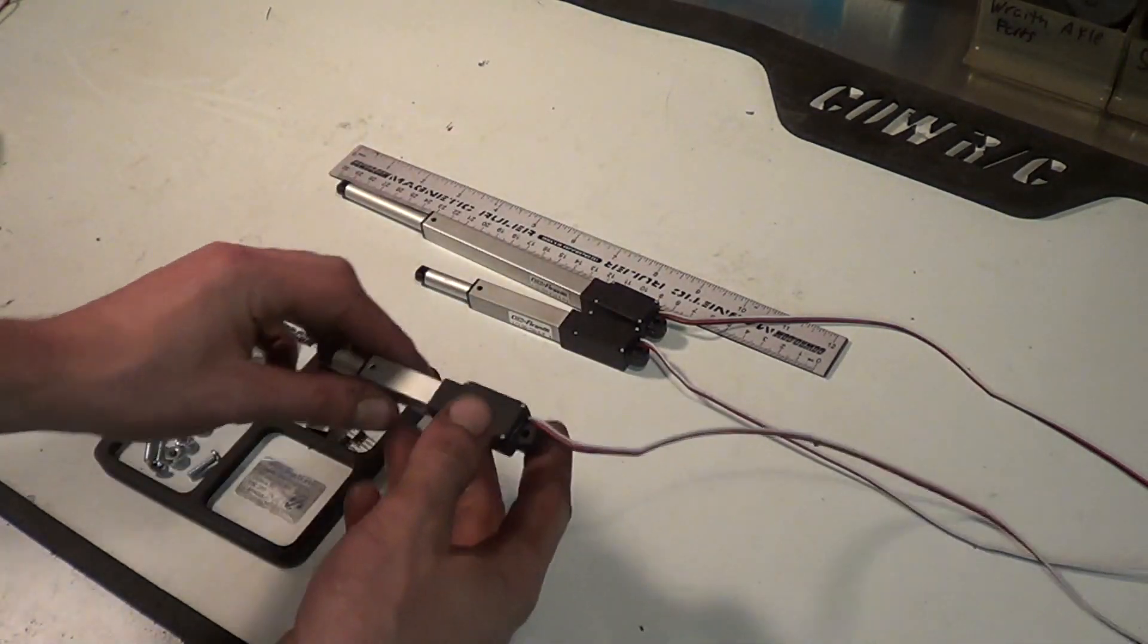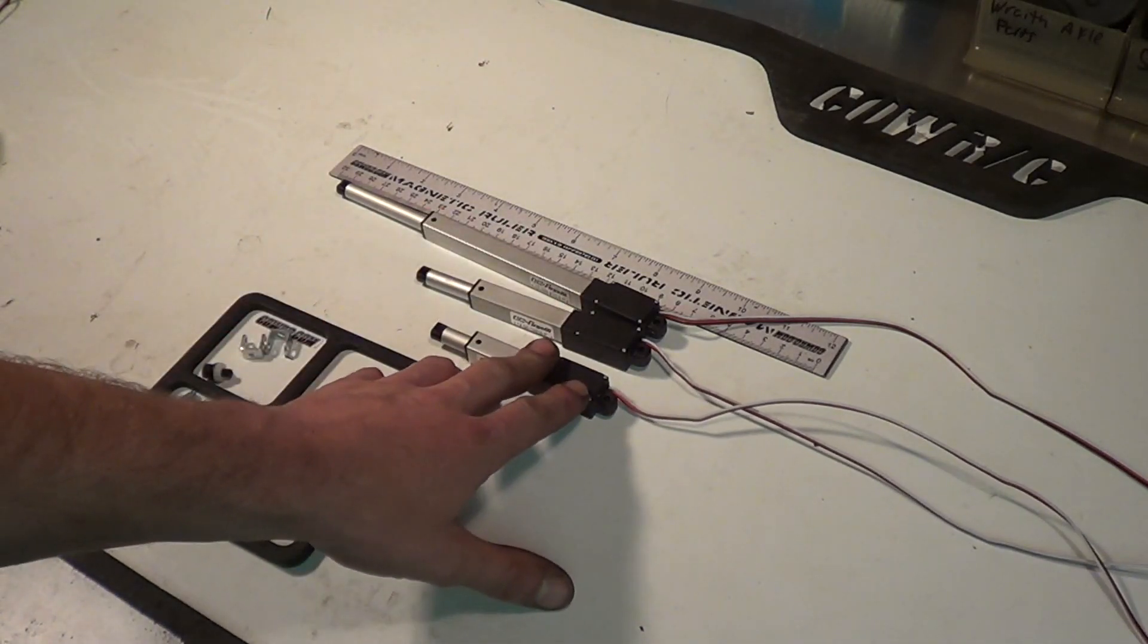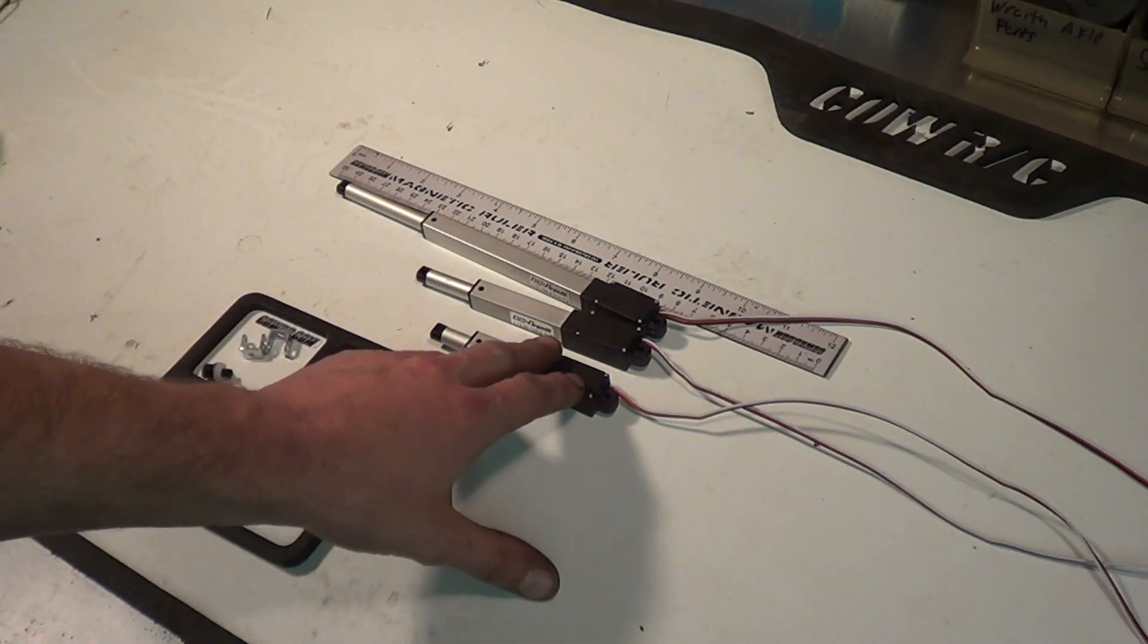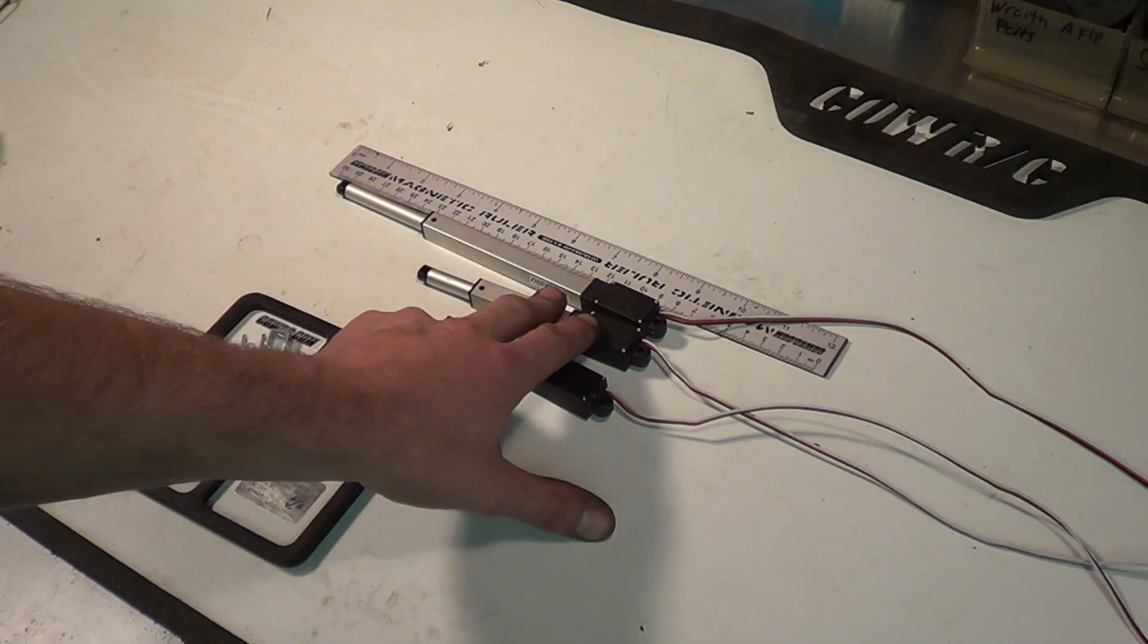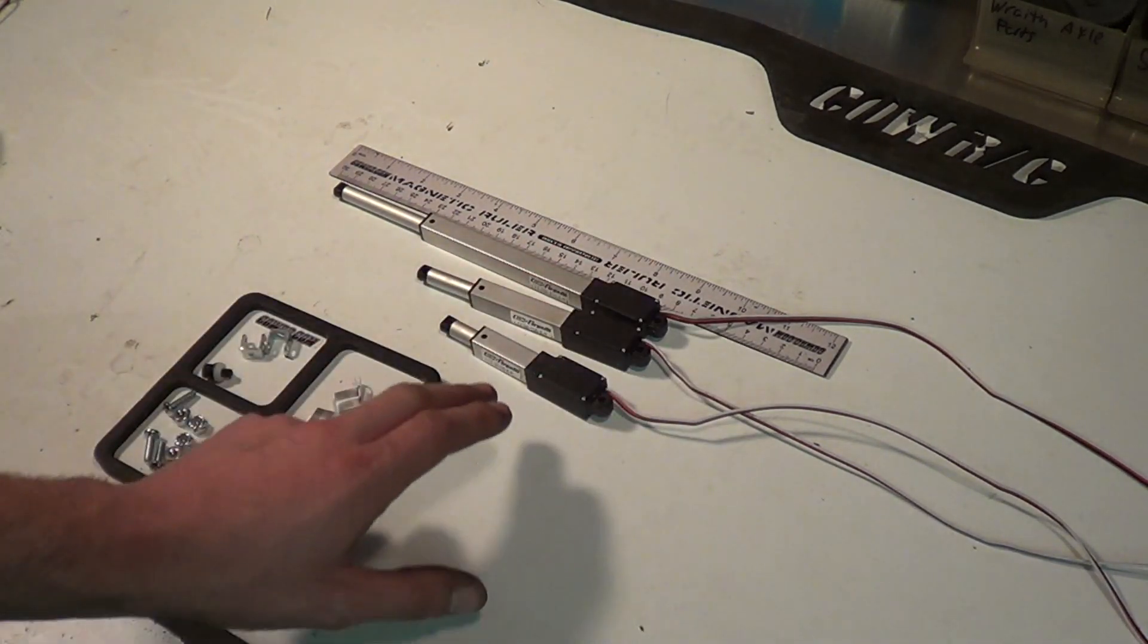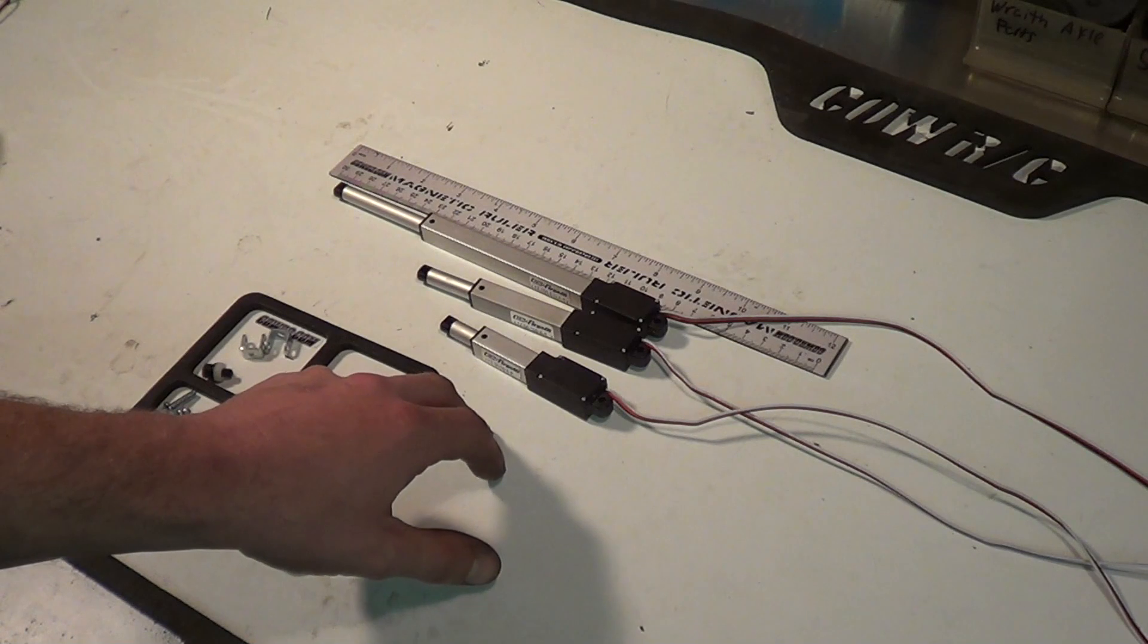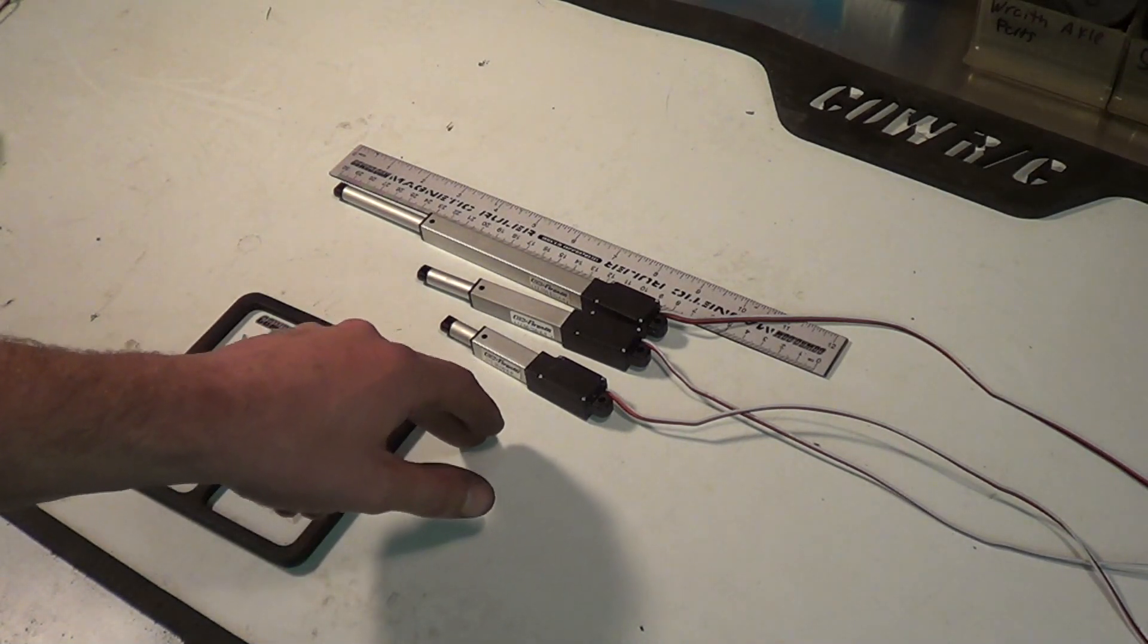They come in three different sizes and three different gear ratios. This one has 30mm of travel, this one has 50mm of travel, and this one has 100mm of travel. You can get them in a 50 to 1 gear ratio, a 100 to 1 gear ratio, or a 210 to 1 gear ratio. They all run at 6 volts.